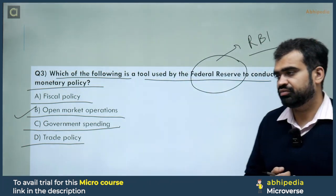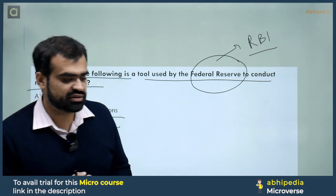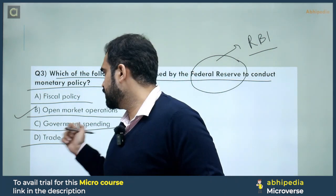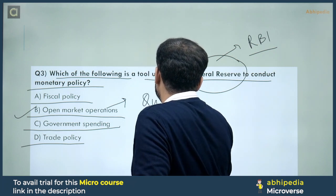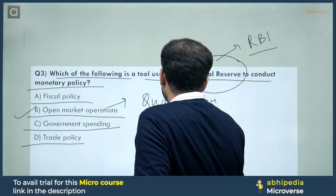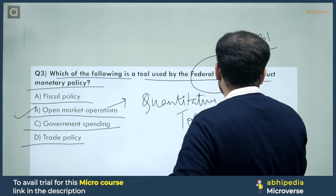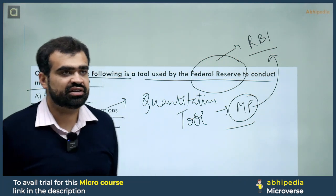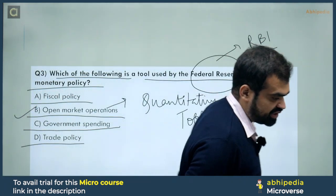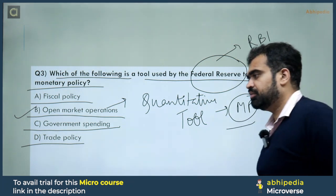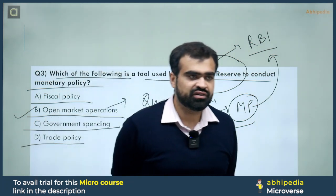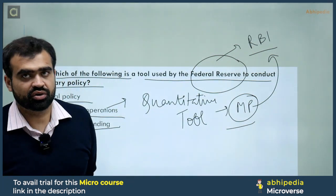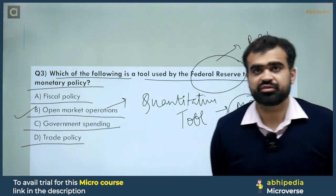Open market operations (OMO) is a quantitative tool of monetary policy, formed by the RBI. Monetary policy has two types of tools: qualitative and quantitative. The main objective of monetary policy is to control the money supply in the economy, maintain price stability, control inflation, and ultimately achieve economic growth — that is the ultimate aim of monetary policy.